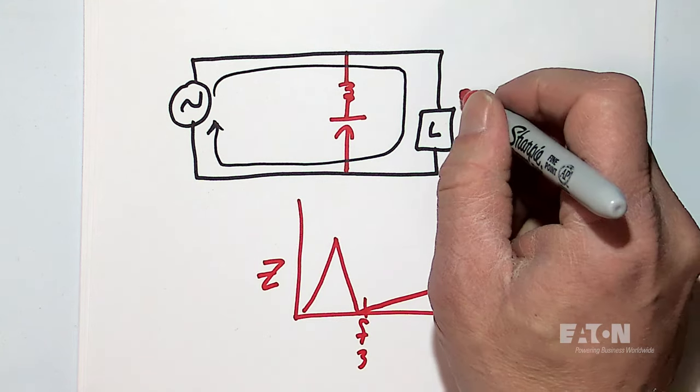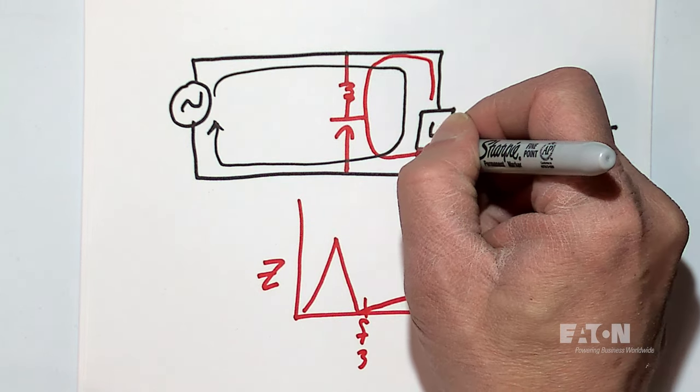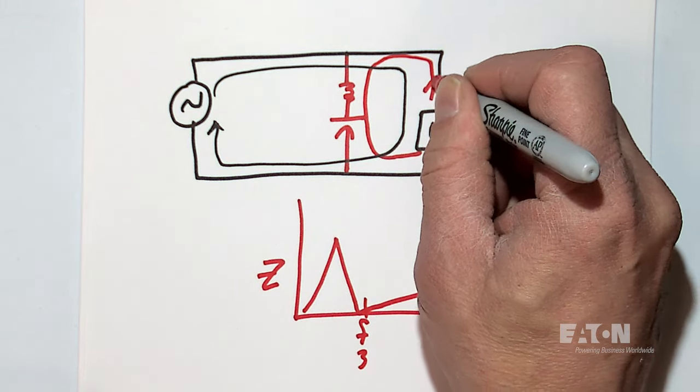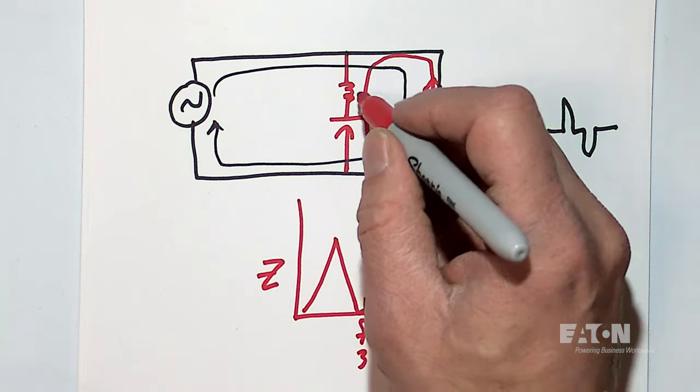So third harmonic current that comes out of the load is now going to go back here and circulate back to the load. So harmonic current comes out, goes back to the load. And current wants to flow in a loop, so it goes through that path.